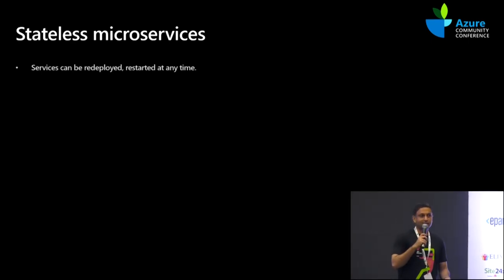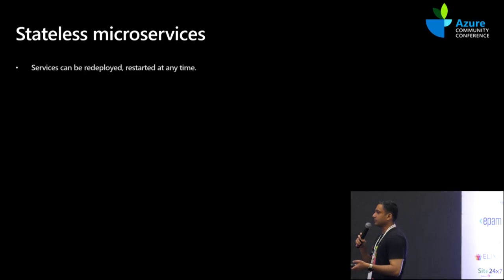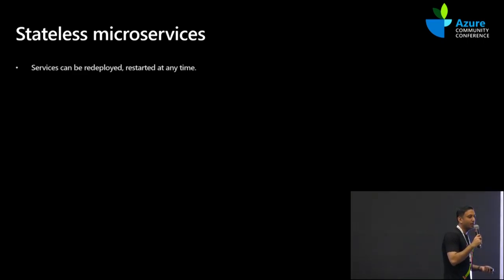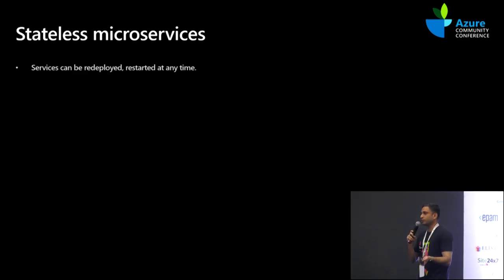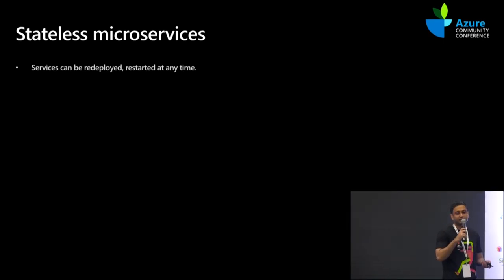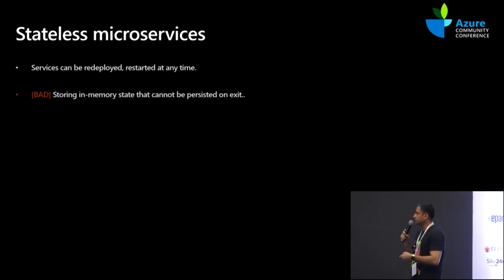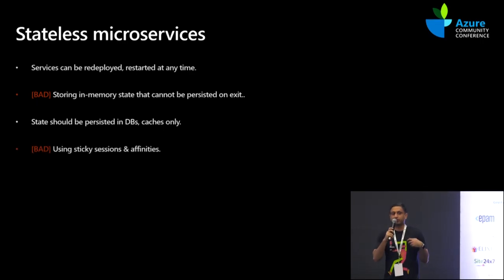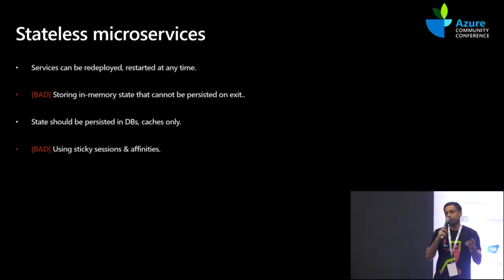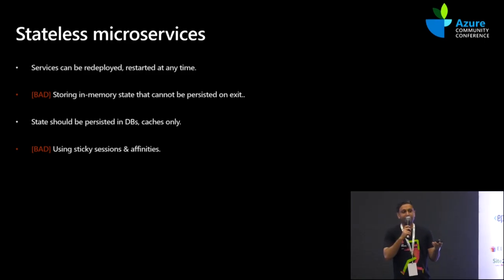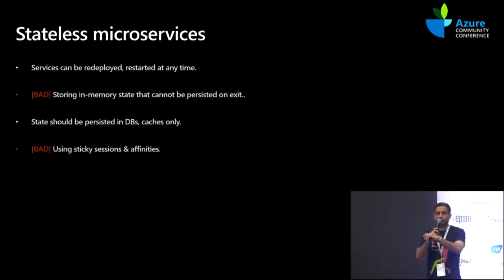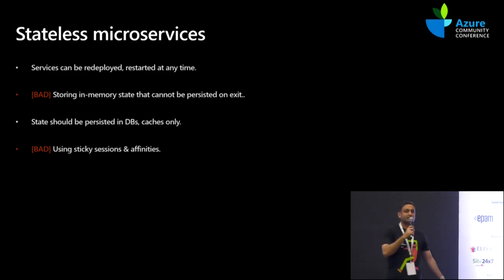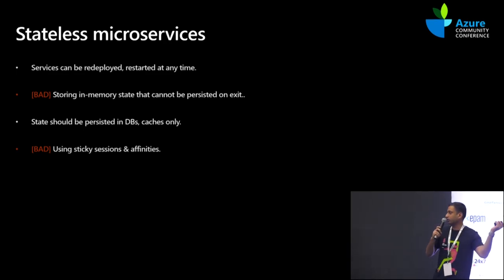Microservices have to be stateless. We always live under the assumption that microservices can be restarted or redeployed at any point in time. They can't maintain state in memory. Every state has to be flushed to a persistent store — a repository. Don't save stuff in memory; persist in caches or databases. Don't use sticky sessions and affinities, because these will be a barrier when you horizontally auto-scale out. If one instance is affinitized to one client, that will impede horizontal auto-scale out. The goal is that an incoming request should be handled by any one of the auto-scaled-out instances.